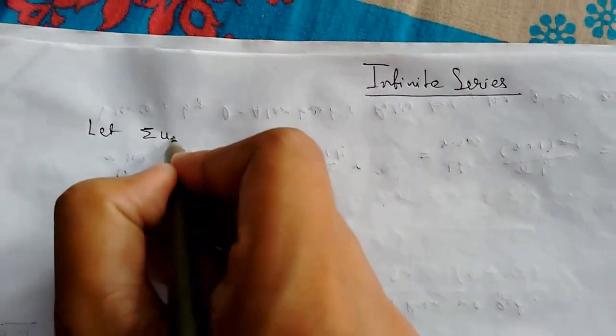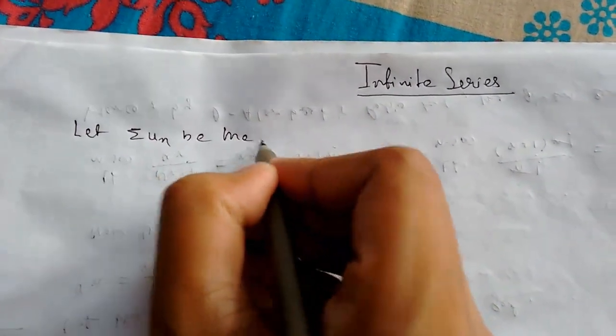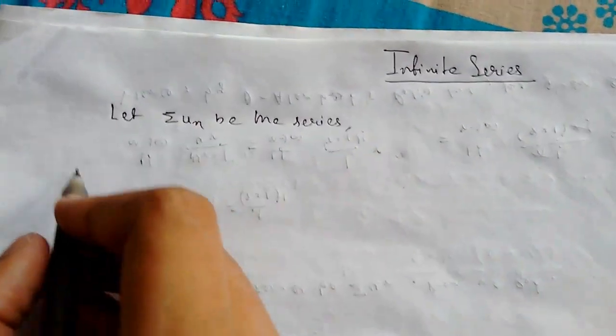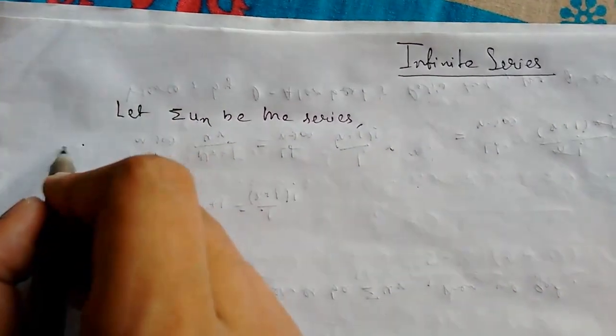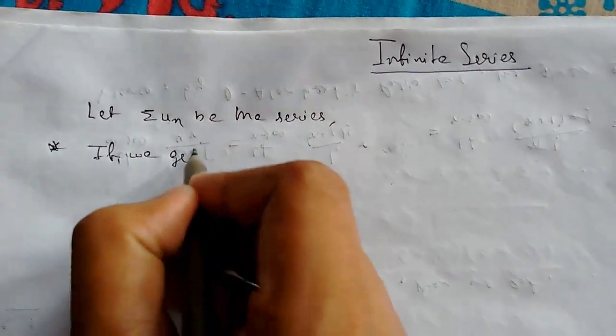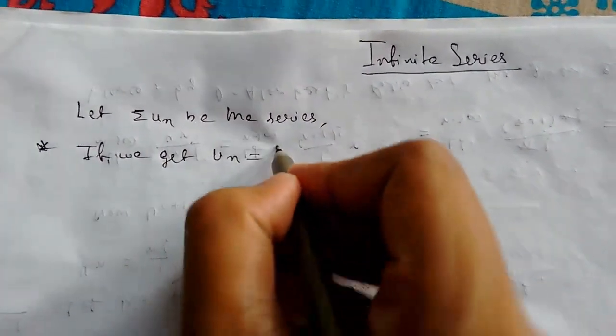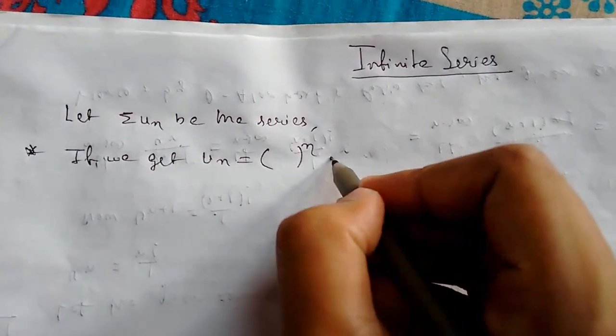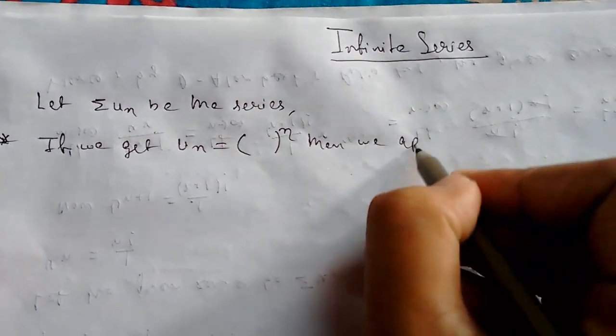Let summation un be the series. First case: if we get un equals something to the power n whole to the power n, then we apply